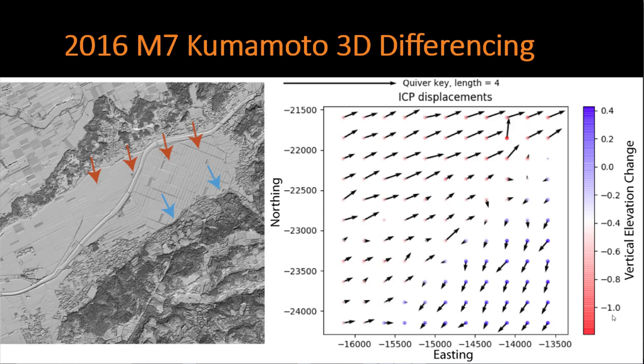These are the 3D differencing results applied to the 2016 magnitude 7 earthquake in Kumamoto, Japan. This was a surface rupturing earthquake which occurred along Kyushu Island of southwestern Japan. In the topographic differencing hill shade on the left, you can see that the earthquake ruptured two faults that cut through these agricultural fields.